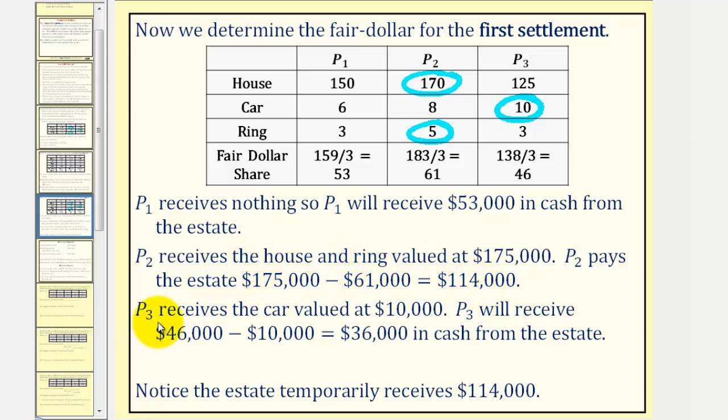Player three received the car worth $10,000, but the fair share was $46,000. Therefore player three receives the car and also $36,000 in cash from the estate. Notice how before the estate pays these cash amounts, it receives $114,000 from player two.